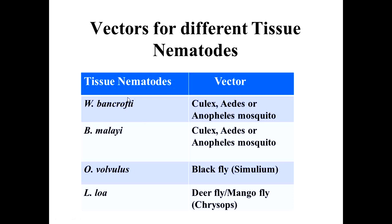You should be familiar with the vectors of tissue nematodes. In the case of Wuchereria bancrofti and Brugia malayi, the vector is a mosquito — either Culex, Aedes, or Anopheles. This should refresh your memory regarding the female Anopheles mosquito which is responsible for malaria. In the case of Onchocerca volvulus and Loa loa, the vector is a fly — black fly for Onchocerca volvulus, and deer fly or mango fly for Loa loa.